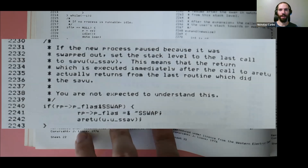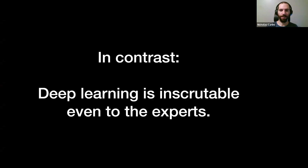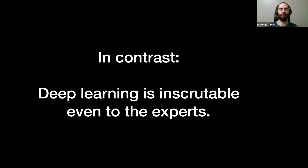The problem is that this is not what we get in deep learning. Machine learning models, and especially deep learning models, are inscrutable even to the experts. There is no one who could write the sentence 'you may not understand this, but I do.' And this is really why it's a problem — the real problem is not just that these models are hard to understand, but that this inscrutability is what's getting worse.